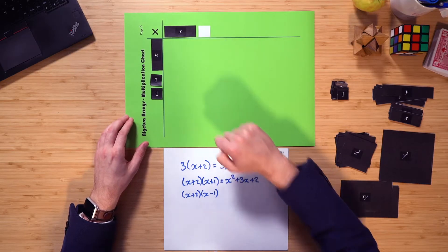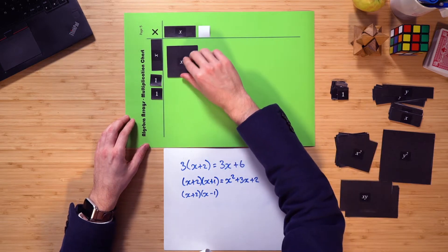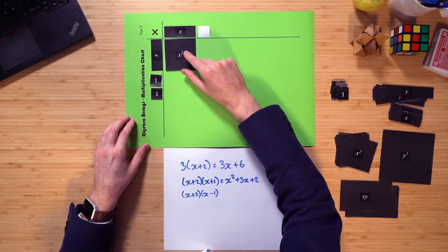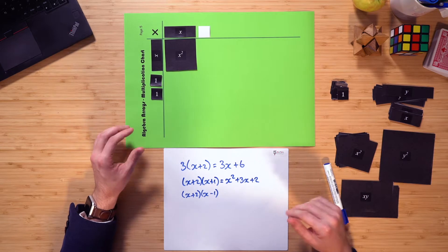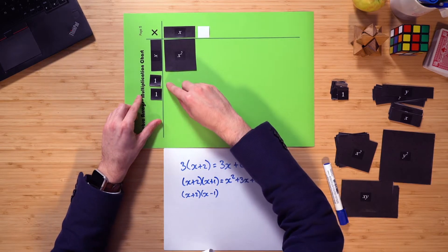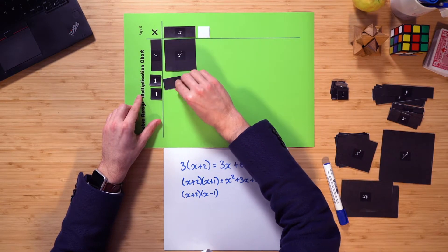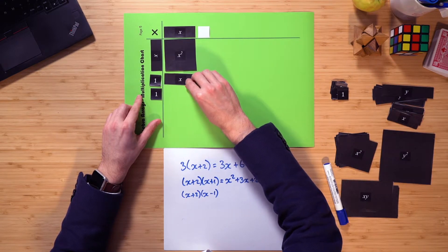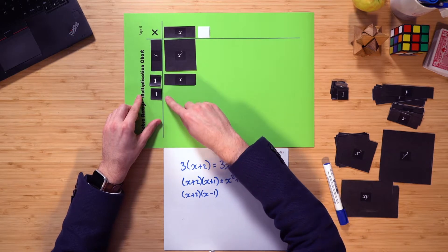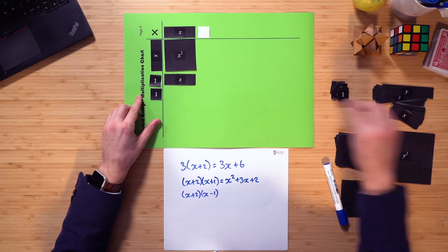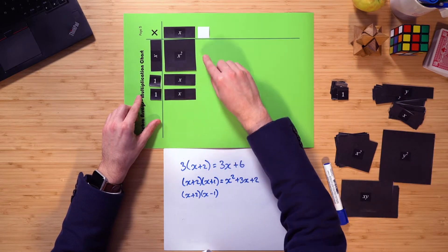Let's have a look. x multiplied by an x, well, that's going to be an x squared, because as you can see, same height, same width, same color, therefore it's a positive x squared. What's going to go here? Well, it's height of 1, width of an x, same color, so therefore it's a positive x. What's going to go here? It's going to be the same again, isn't it?